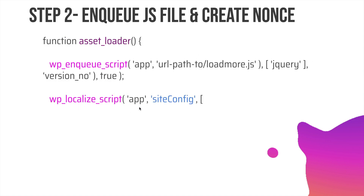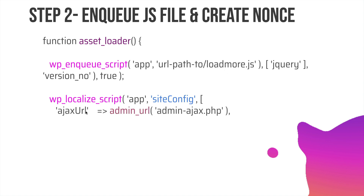We use wp_localize_script and put the name of the hook of the script we are enqueuing — in this case 'app', which is our hook name. We put the name of the object that will be passed to this file, and then in the form of an array we pass different properties as key-value pairs. The first key is the AJAX URL, and admin_url() is a WordPress function that provides the path up to admin-ajax.php, so that's going to be our URL.